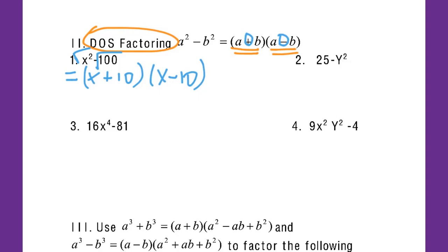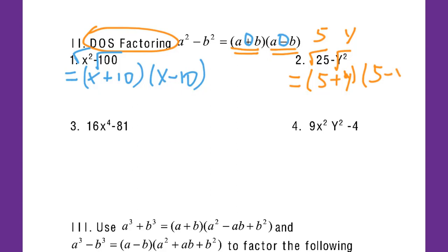Let's go to the second example. We have a subtraction. 25 is a perfect square, so I take the square root and get 5. The other term gives y. So the answer is (5 plus y) times (5 minus y).